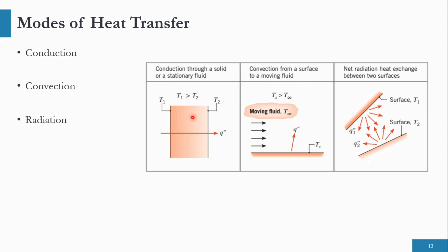If we look at diagram number 1, we can see that there are two sides of a block — one side at temperature T1 and the other side at temperature T2. The temperature T1 is higher than temperature T2. As per the thermodynamic fundamentals, the heat Q will move from high temperature to lower temperature. The direction of heat transfer is from T1 to T2.